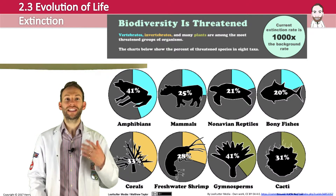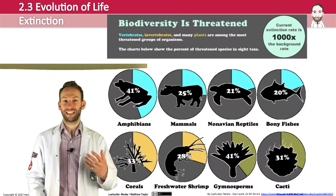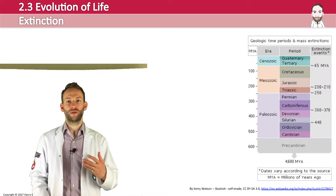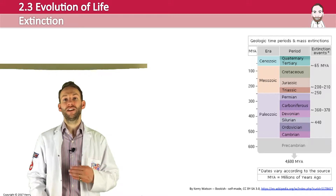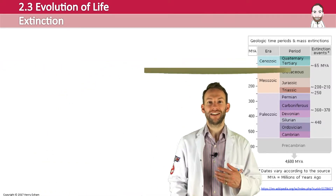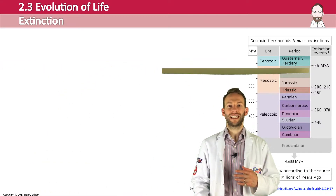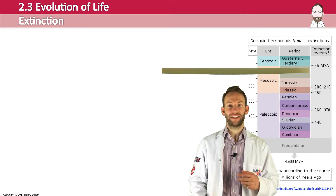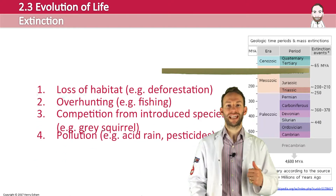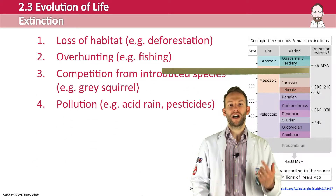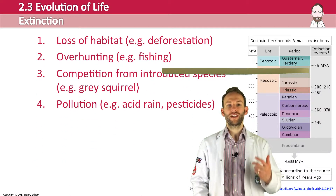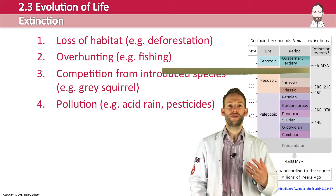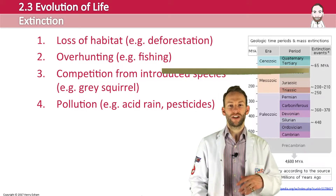This is called mass extinction. We are currently in the midst of the biggest mass extinction of all time. There have already been five mass extinction events, but this one is the worst ever. It is being caused by human activities: loss of habitat from deforestation, over-hunting and overfishing, competition from introduced species like the gray squirrel, and pollution from our growing population — things like acid rain and pesticides.